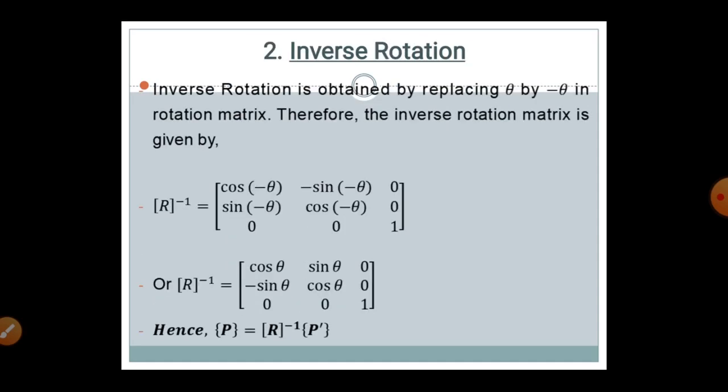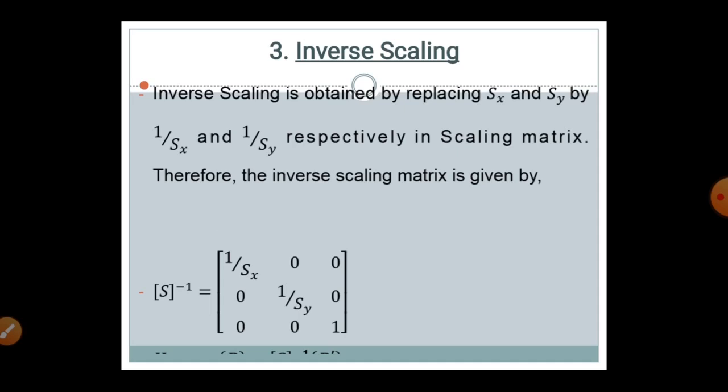Similarly, the inverse rotation is obtained by replacing theta by minus theta in the rotation matrix. Therefore, the inverse rotation matrix is: [cos(-θ), -sin(-θ), 0; sin(-θ), cos(-θ), 0; 0, 0, 1]. This simplifies to: [cos θ, sin θ, 0; -sin θ, cos θ, 0; 0, 0, 1]. Hence P equals to the inverse rotation matrix multiplied by the modified function P'.